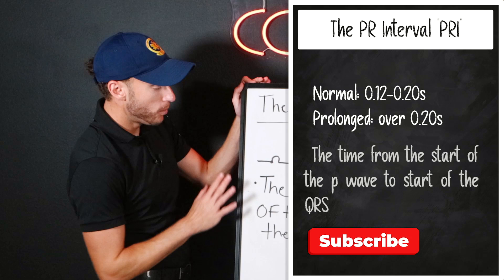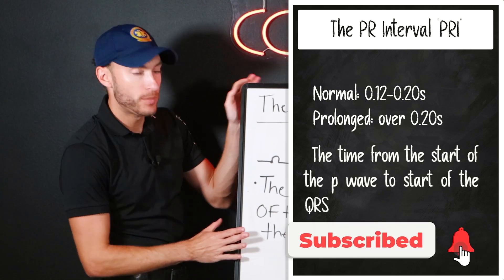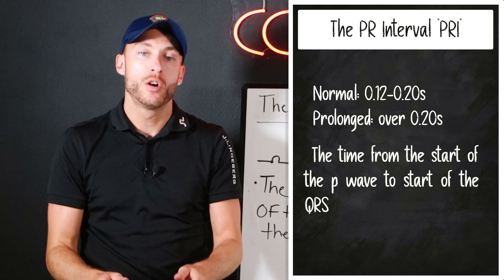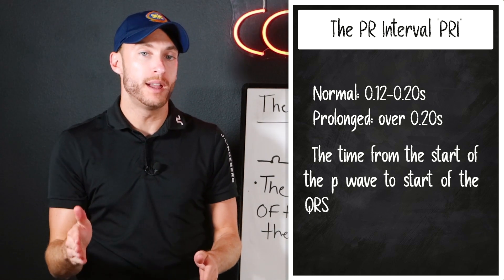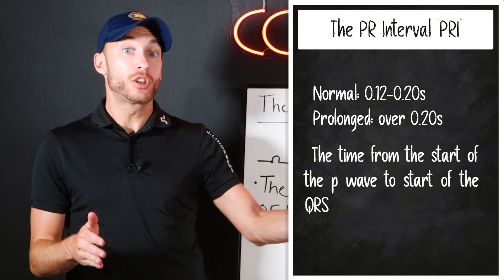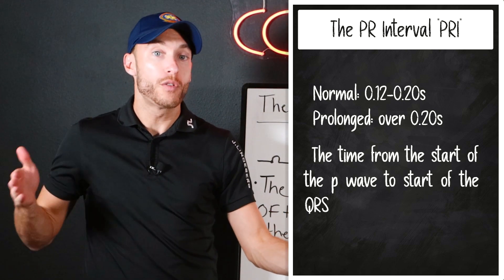Right here we can see, as a reminder, the PR interval is the time frame from the start of the P wave to the beginning of the QRS, meaning the beginning of the Q wave and the start of the P wave.